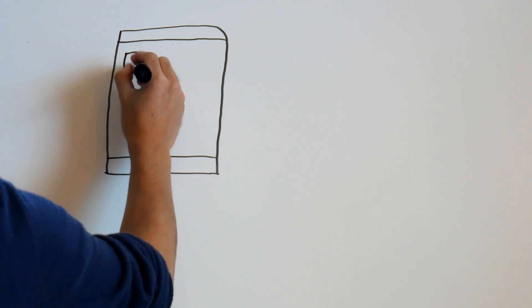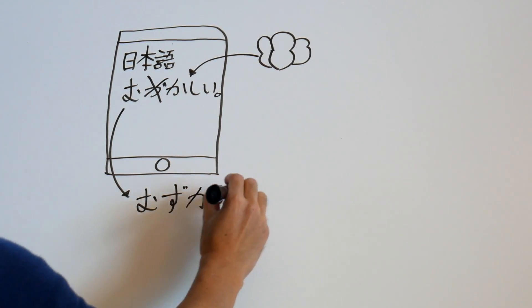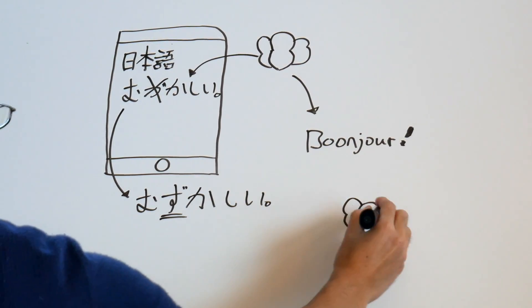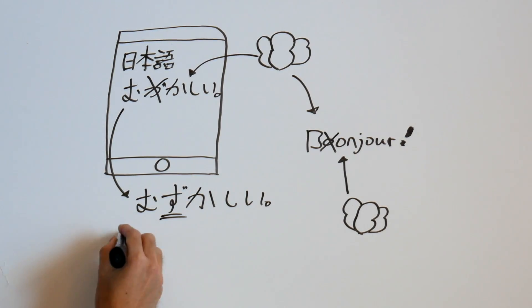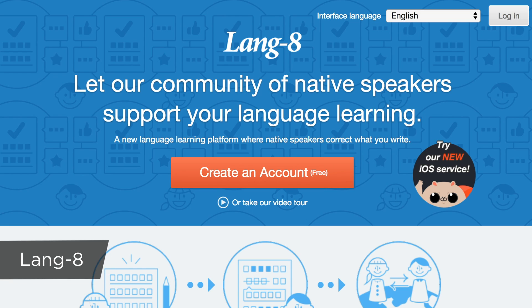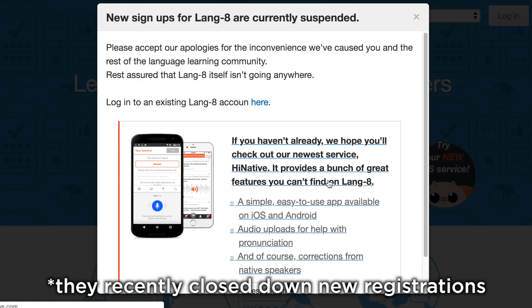So let's say you're learning Japanese — you'll write some stuff in Japanese on this app and a random native Japanese speaker is going to take a look at what you wrote and fix it for you. And if he's learning French, then random French native speakers are going to fix what he wrote. That way everyone will be able to improve their writing skills. There's already a similar website called Lang8, but the main problem is that it's kind of hard to use and they recently closed down new registrations, so it's pretty much unusable at this point. I want to make a better version of what they were trying to do.